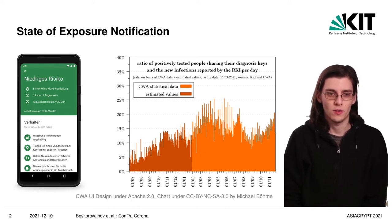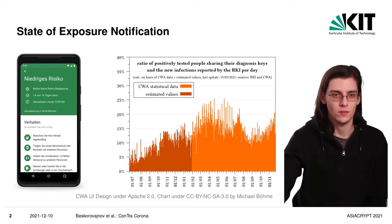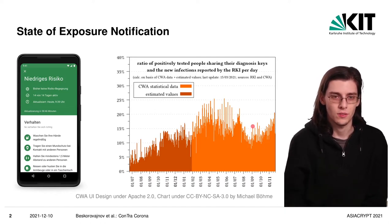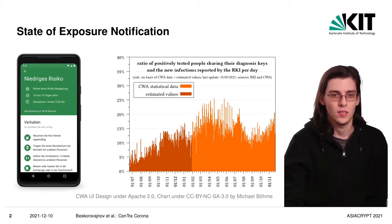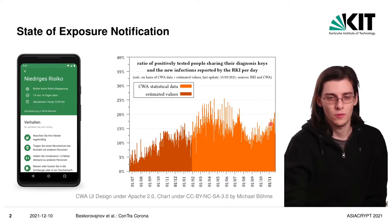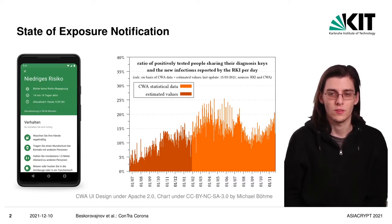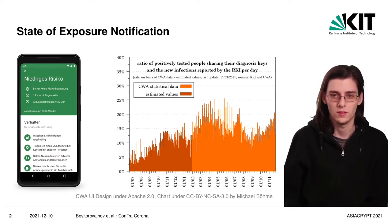But whenever a new infection is detected, only about 20%, as seen in this graph on the right, of those infections result in a key shared with the contact tracing app and then by that contacts being warned. So only one in five infections uses the contact tracing app to warn other people.